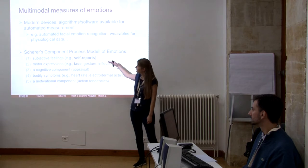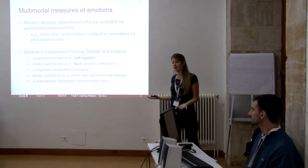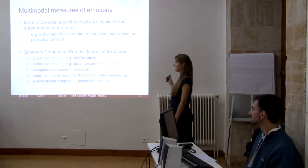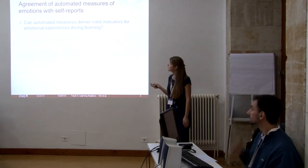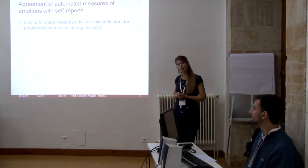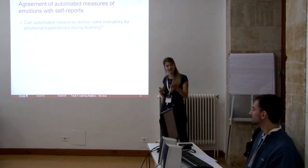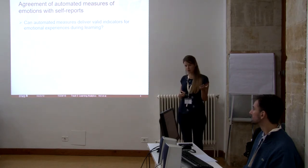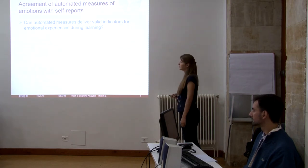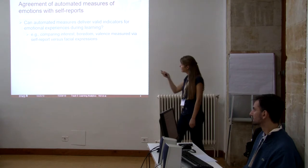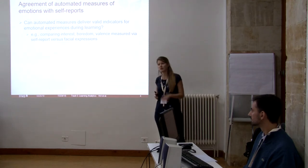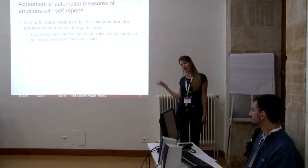Those different components don't necessarily overlap completely. They are different components of the same distinct emotions, but it's not yet clear how they relate to each other. This is why we tried to compare different ways of measuring emotions. In the study presented with this proceeding, we compared a facial emotion recognition software against students' self-reports while students were reading texts. We did this with three emotional states: students' interest, students' boredom, and students' valence — whether they were in a positive or negative emotional state.